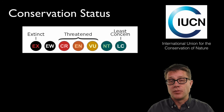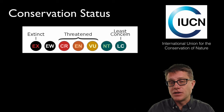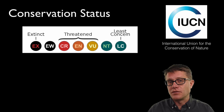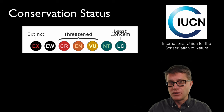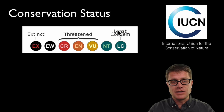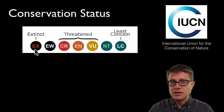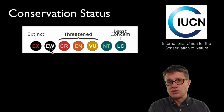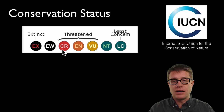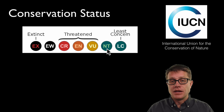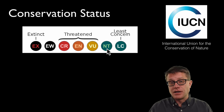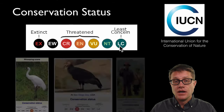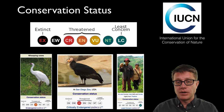So how do we solve this problem? The first step is to identify where the problem is. The IUCN — International Union for the Conservation of Nature — has been around for over half a century. What they have done is come up with different statuses: Extinct, Extinct in the Wild (where we may have them in a zoo but they do not exist in the wild), then Critically Endangered, Endangered, and Vulnerable, then Near Threatened, and finally Least Concern. If you go on Wikipedia you can look up any animal or plant and it will tell you its conservation status.